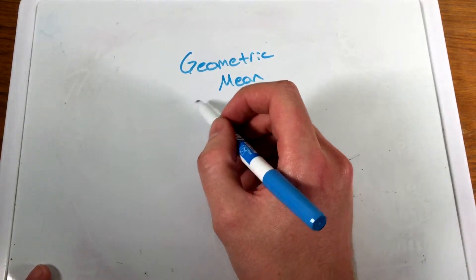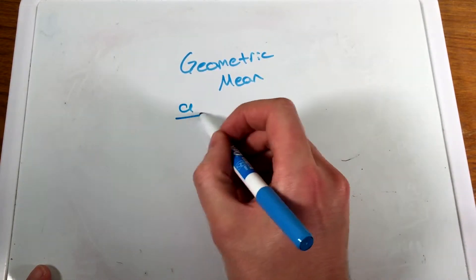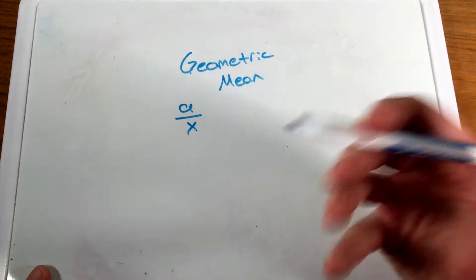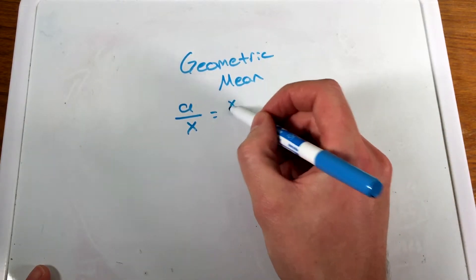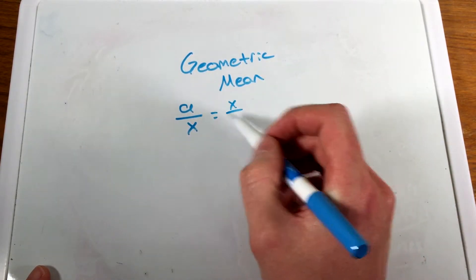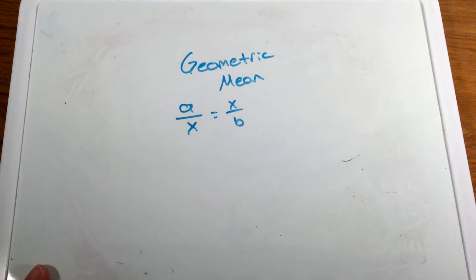If we have two positive numbers, it's a value of x such that a over x equals x over b between a and b. It's some value of x that satisfies this equation.